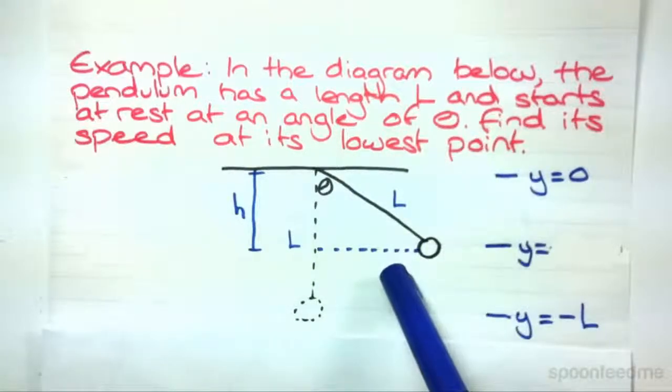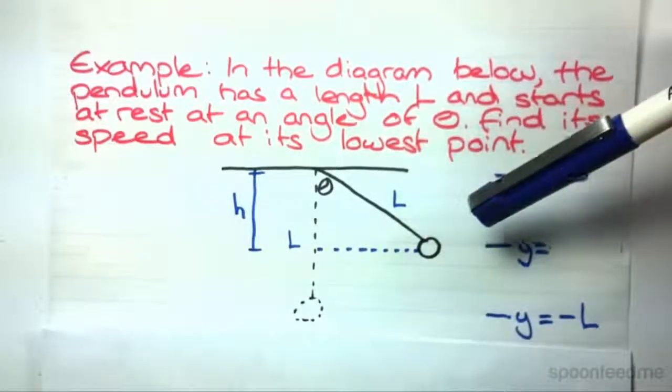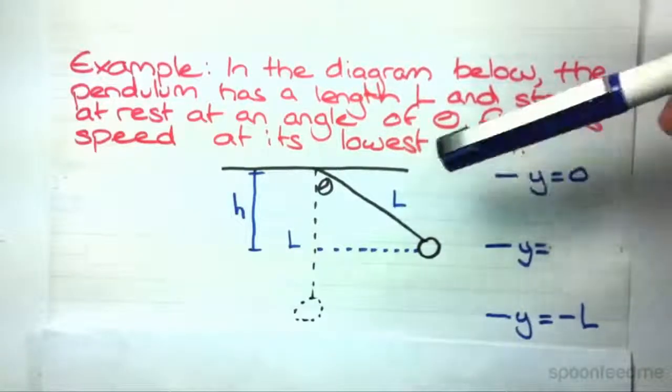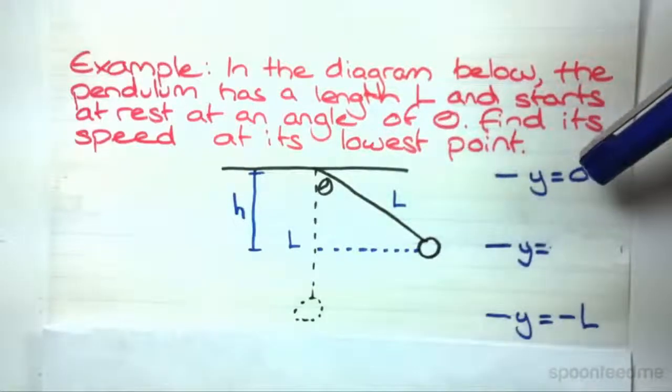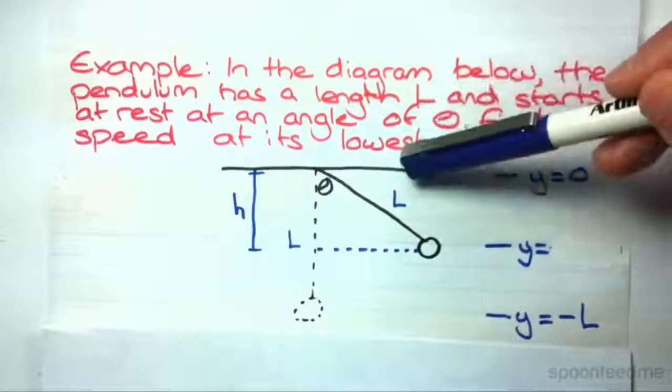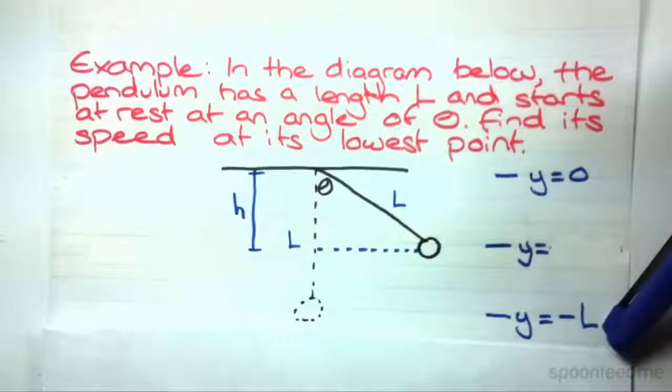So we've got a drawing of it here. And I've drawn some information in. We've got the length L over there and we've got the angle theta in there. We've got y equals 0, I've defined as the top here, so where it's connected. And that means that y equals minus L is here.